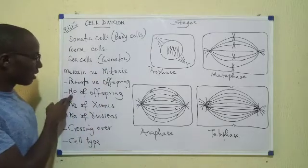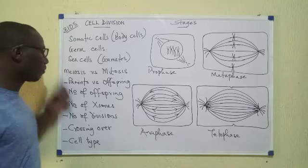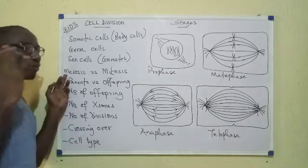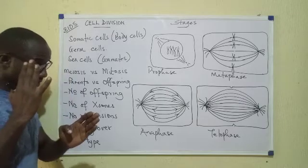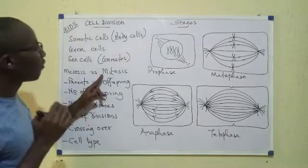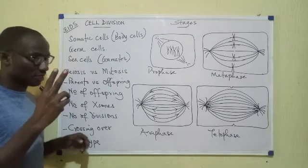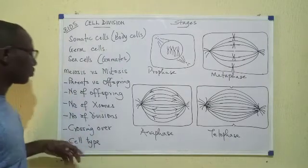Then what about the number of offspring? For meiosis, one parent produces four daughters, usually. Then for mitosis, one parent produces two daughters. The offspring, the daughter cells, are usually two.